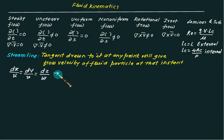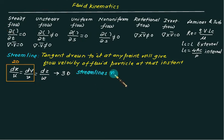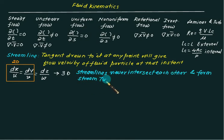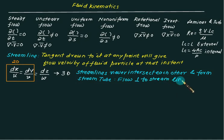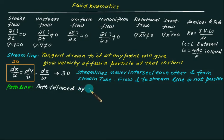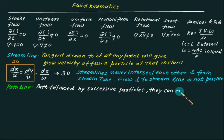This streamline equation is for three-dimensional flow; the first two terms (dx/u = dy/v) apply for two-dimensional flow. Streamlines never intersect each other and form a stream tube. Flow perpendicular to a streamline is not possible. A path line is defined as the path followed by successive fluid particles — path lines can cross each other.